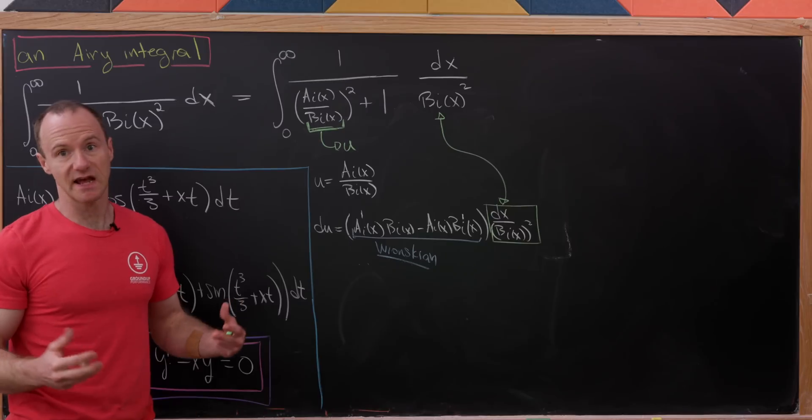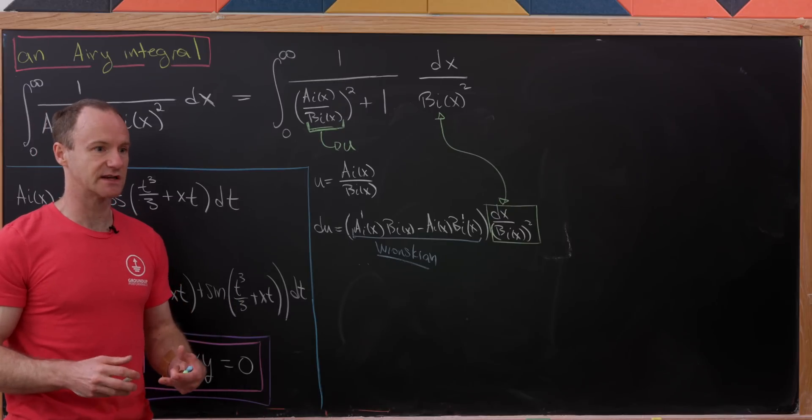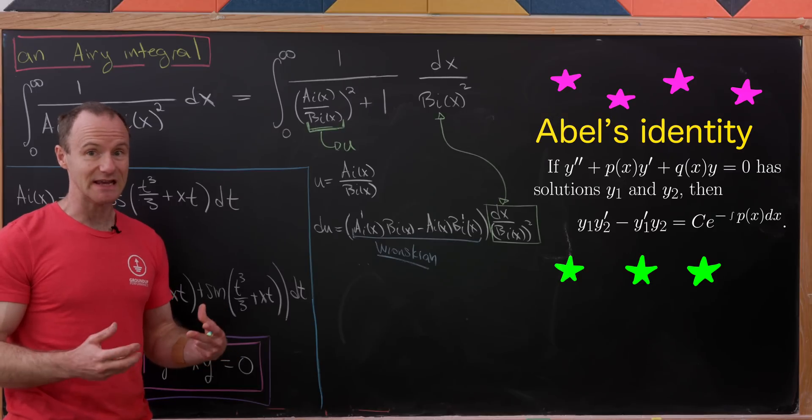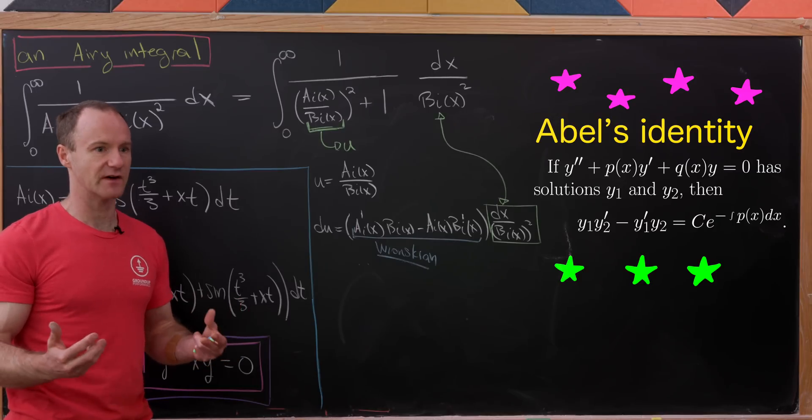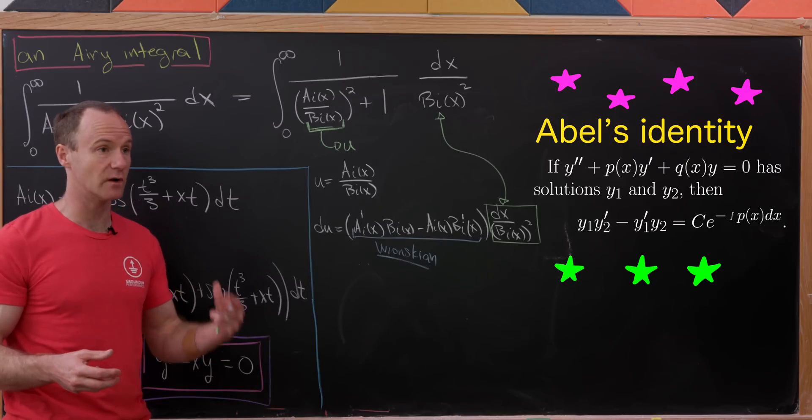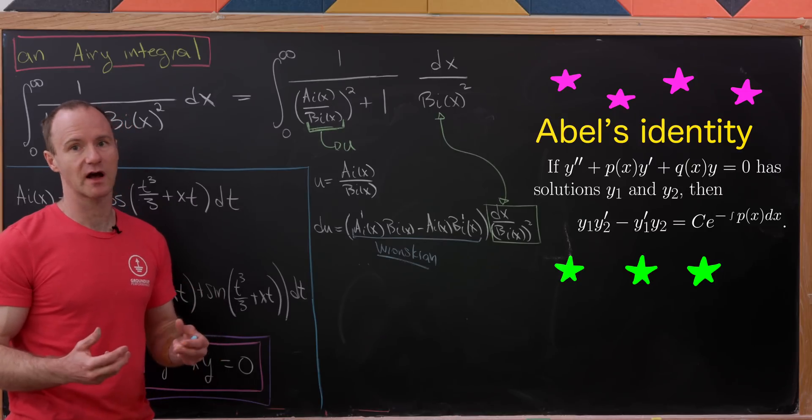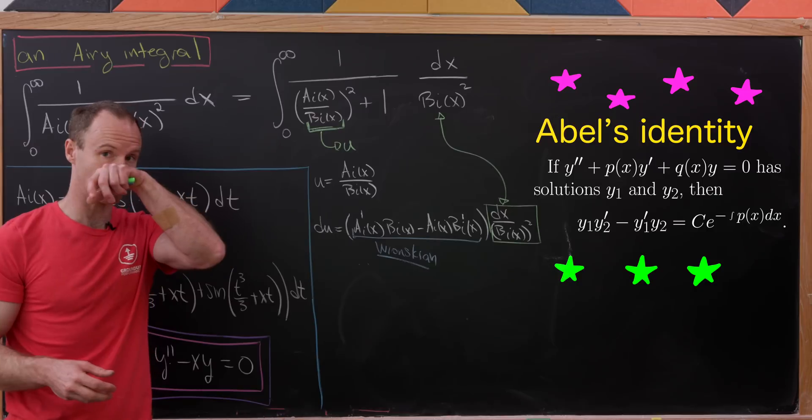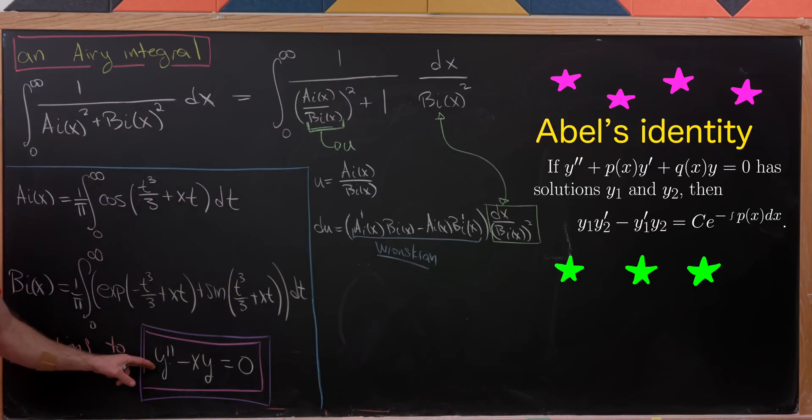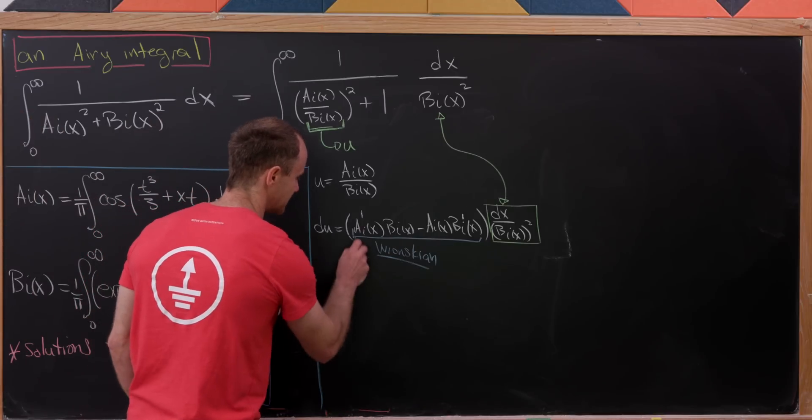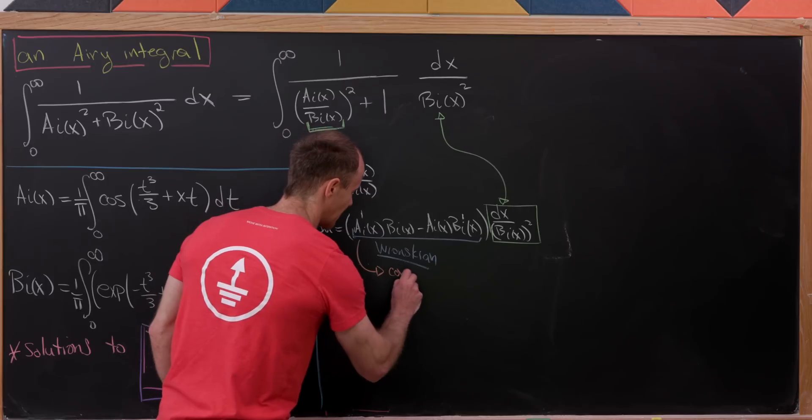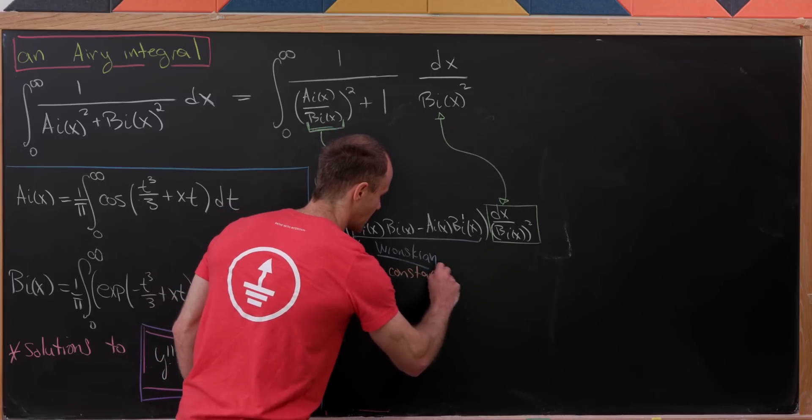So, by Abel's identity, the Wronskian will be some constant times e to the power minus the integral of P of x dx, where P of x is the coefficient of y prime in the original differential equation. But let's notice there's no y prime in our original differential equation, which means that we would have e to the 0, which means all we would get here is a constant.